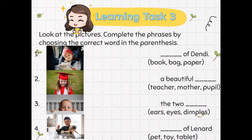Let's take a look at the pictures. Complete the phrases by choosing the correct word in the parenthesis. Number 6: Is the picture showing a book, bag, or paper of Dendee? Is she a beautiful teacher, mother, or pupil? The two ears, eyes, or dimples?